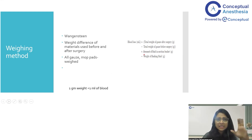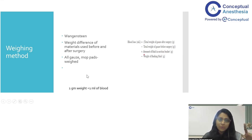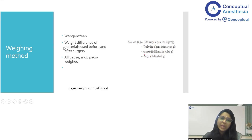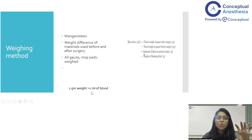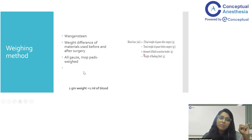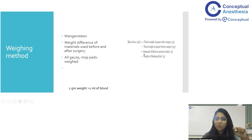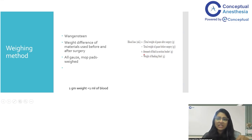The weighing method was developed by Wangenstein. Preoperatively, you weigh all the mop pads, gauze pieces, and laparotomy sponge pads. You also note the amount of irrigation fluid used and weigh everything postoperatively. Based on the normal density of blood, one gram of weight gain equals one ml of blood absorbed. So if preoperatively the gauze weighed 100 grams and postoperatively it weighs 200 grams, the blood loss is approximately 100 ml.